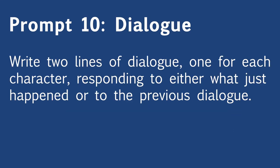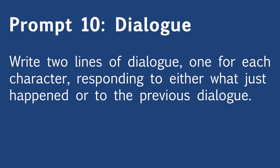For your next prompt, write two lines of dialogue — one for each character. The dialogue might respond to what just happened in your stage directions or to the previous dialogue. It's up to you who speaks first. If you're doing the pass-the-paper version, pass the paper now so that the original writer gets their play back — no matter how many people you're writing with, you should wind up with the play you started.